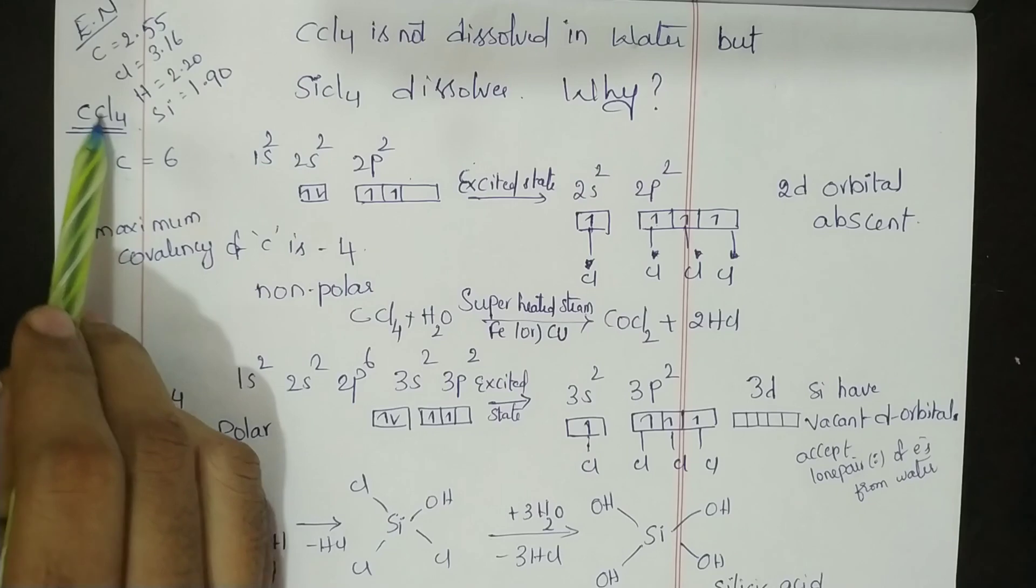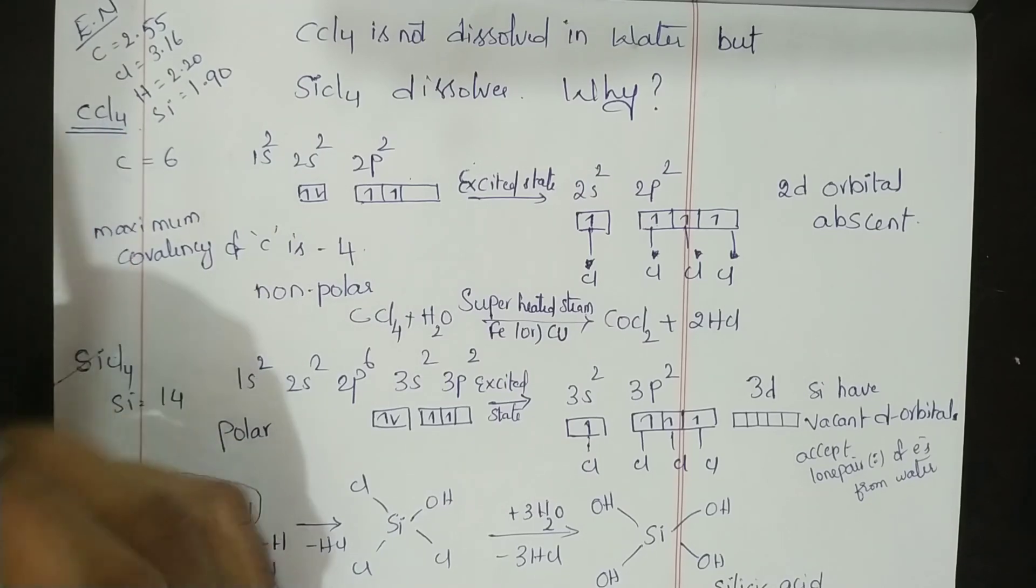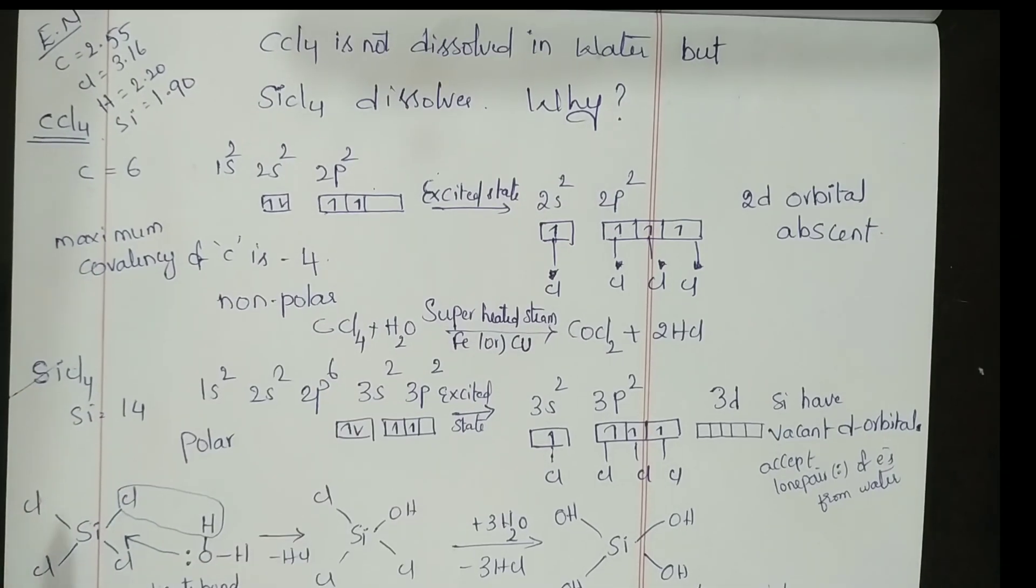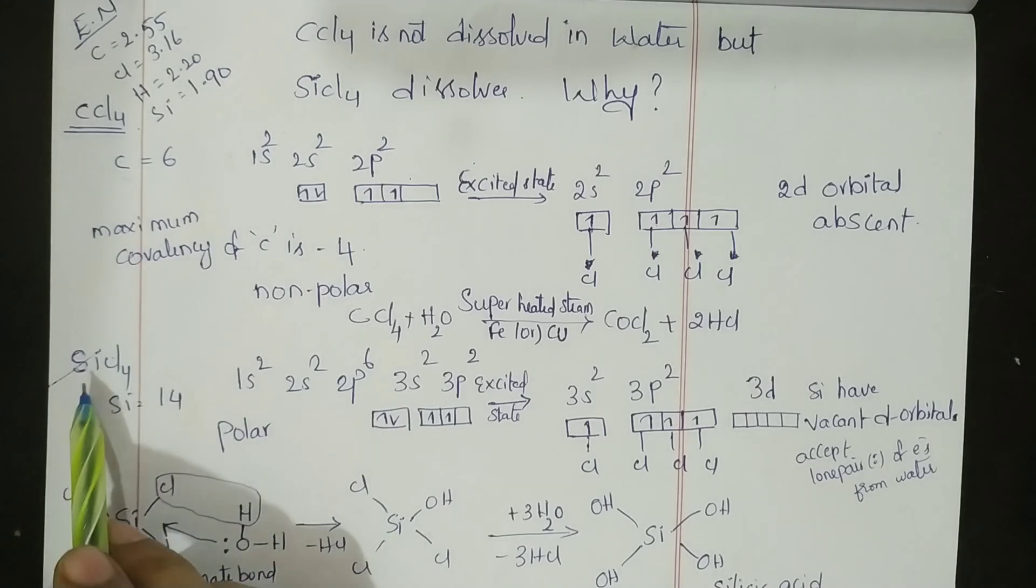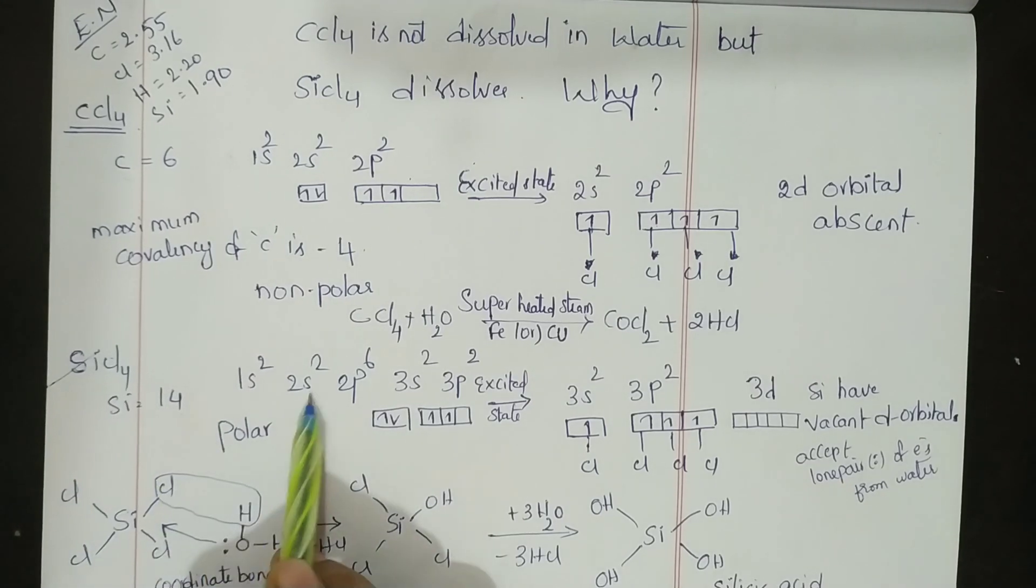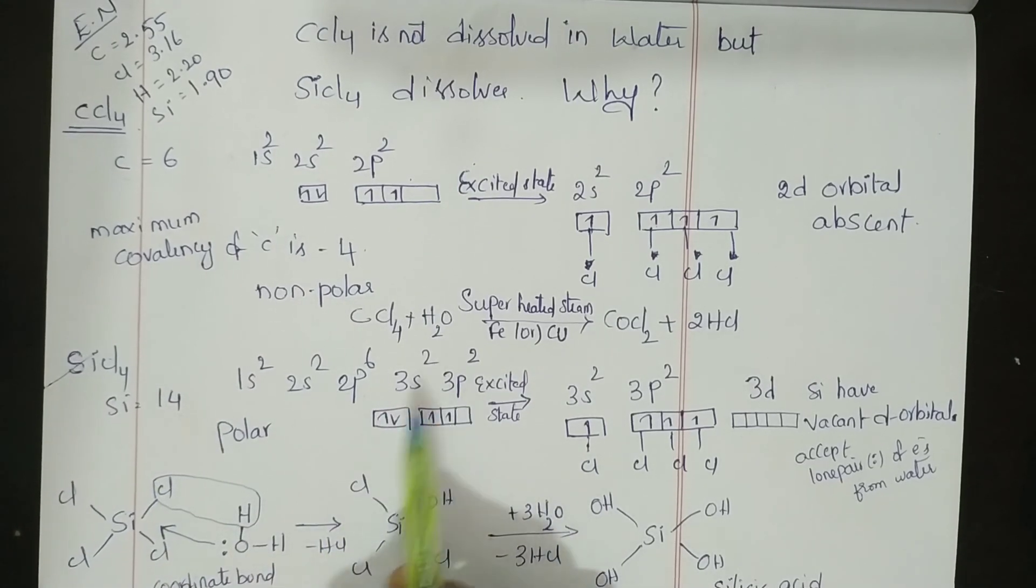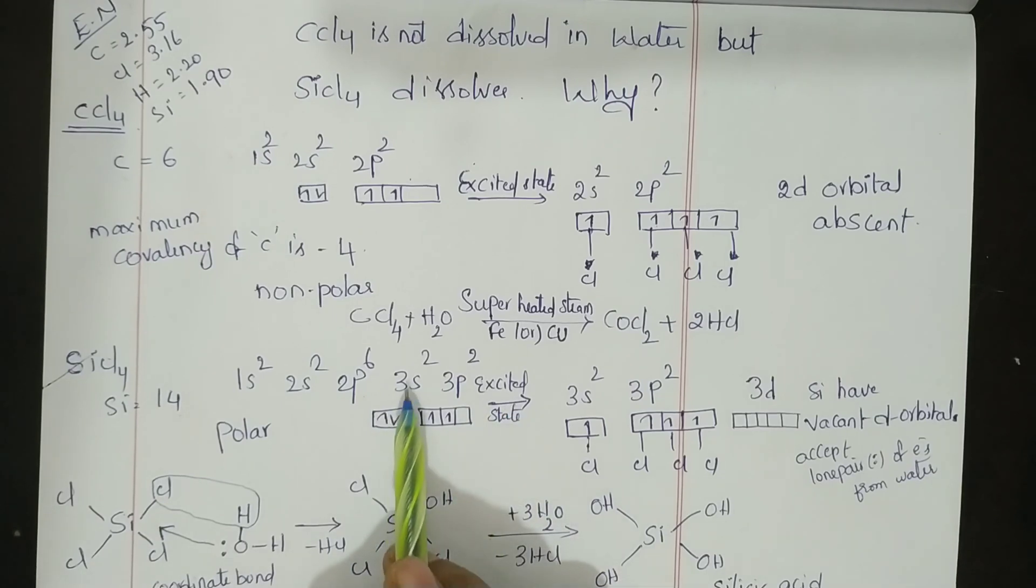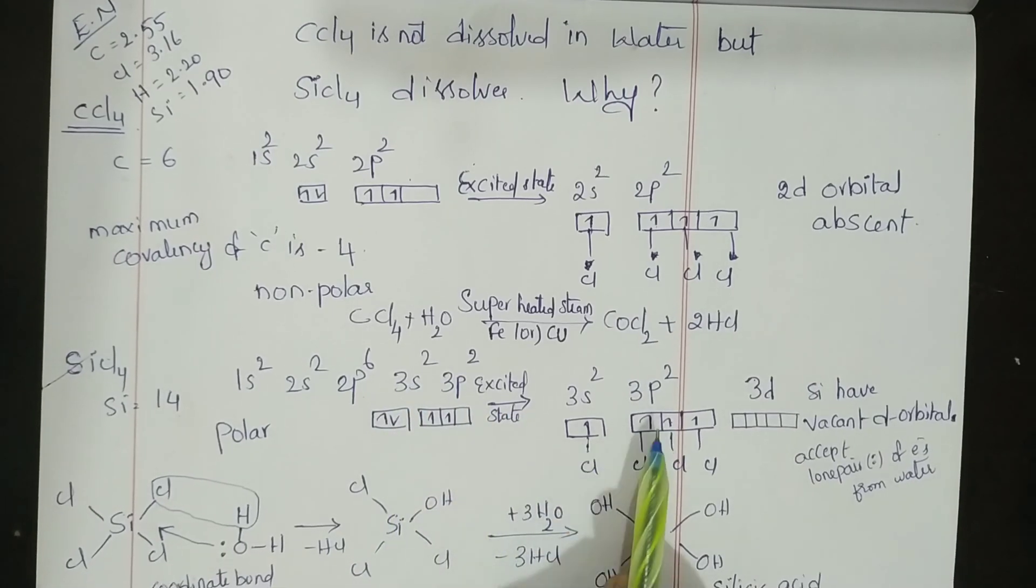Coming to SiCl4, silicon atomic number is 14: 1s² 2s² 2p⁶ 3s² 3p². In excited state, this 3s electron is entered into the 3p orbital. These four lone electrons are bonded with four chlorine atoms to form SiCl4.